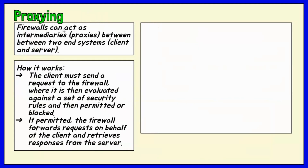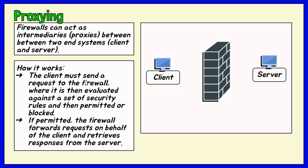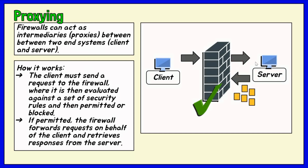Proxy firewalls can act as intermediaries or proxies between clients and servers. The client must send a request to the firewall, where it is evaluated against a set of security rules and then permitted or blocked. If permitted, the firewall forwards the request on behalf of the client and retrieves responses from the server.